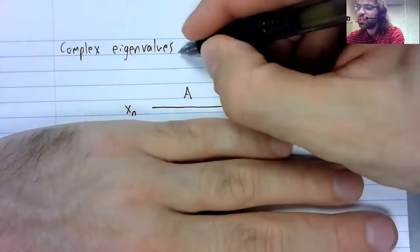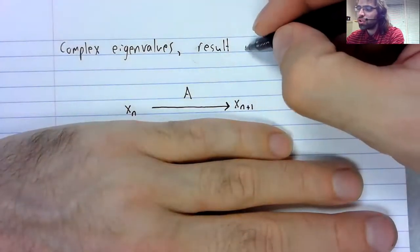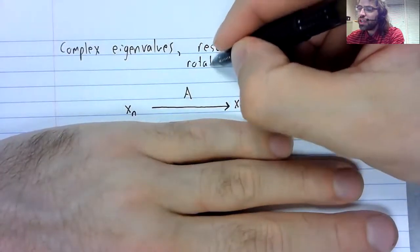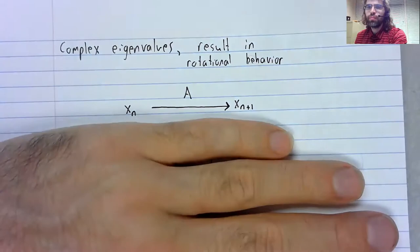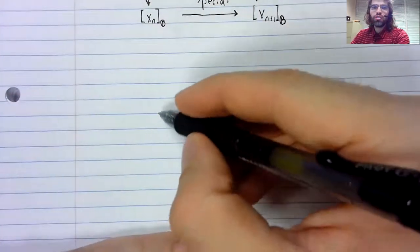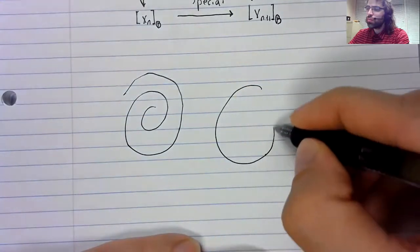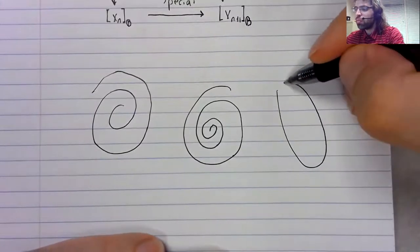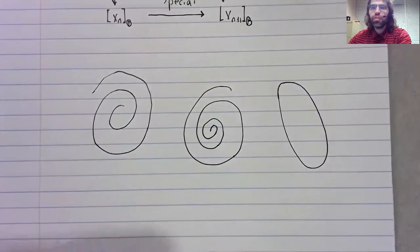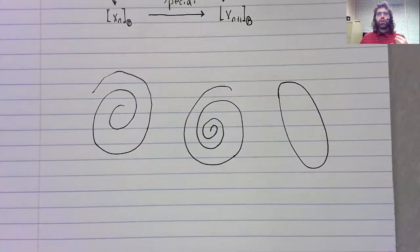Therefore, complex eigenvalues always result in rotational behavior. They could cause the dynamical system to spiral out or to spiral in or maybe form a closed loop. But if you see complex eigenvalues in a dynamical system, that means rotation.